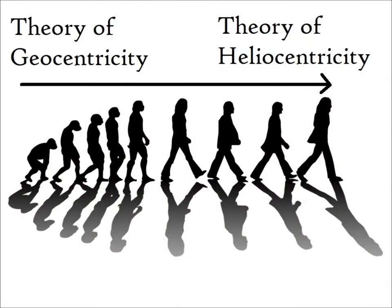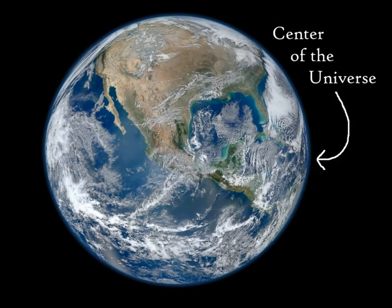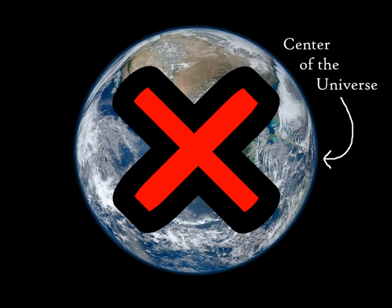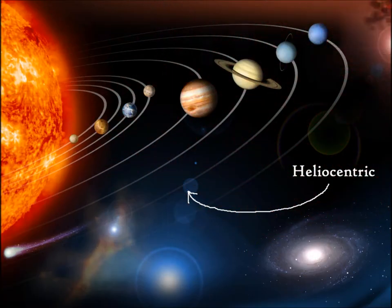This theory evolved from the theory of geocentricity, which states that the earth is at the center. Oh and one more thing, they're both wrong. Neither the earth nor the sun are at the center of the universe, but it is at least safe to say that our solar system is heliocentric.